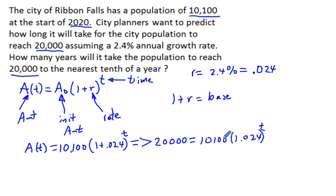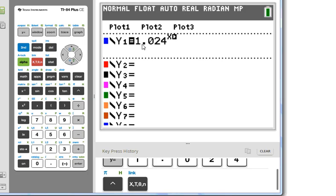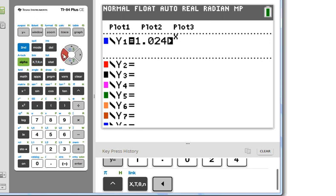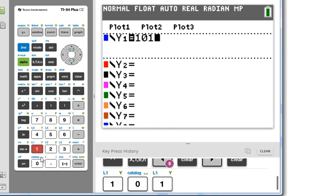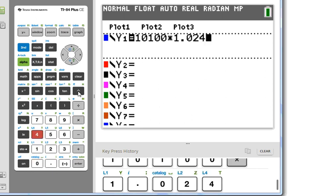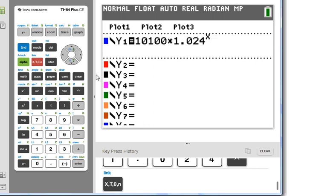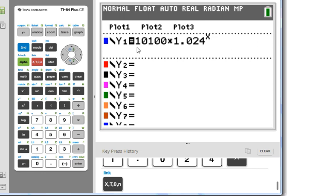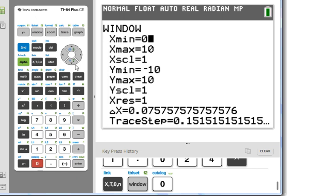We can solve this equation in a number of ways. I'm just going to go to the graphing calculator. Here's the equation we have, 10,100 times 1.024 to the power of x. To graph this equation, we're going to have to go out several years. So I'm going to go to a window of 0 to 20.